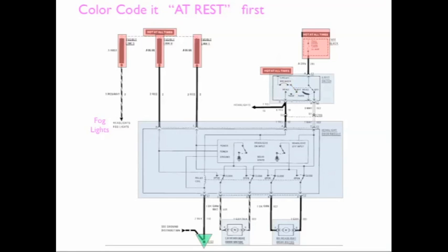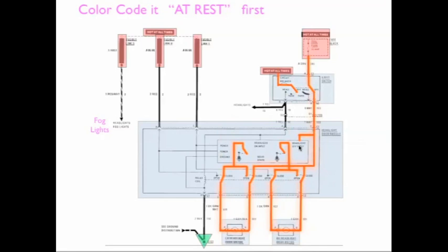So first let's color code the diagram at rest. We have two power feeds into the switch. One comes in, it's hot at all times, travels down and stops at an open. The next one comes in, it is hot at all times and has a closed switch here. This will remain red because there's power all the time. It comes down and puts a power input into the headlight-off input, then travels down through a closed switch, through the continuity in the motor, until it hits opens where it stops — and the same thing on the other side.